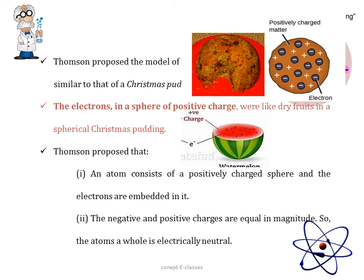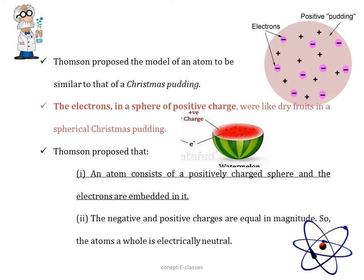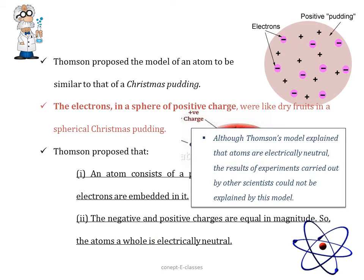We can also think of a watermelon. All the positive charge of an atom is spread over like the red edible part of the watermelon whereas the electrons are like seeds inside the watermelon. Thomson proposed that an atom consists of a positively charged sphere and the electrons are embedded in it. He also proposed that the negative and positive charges are equal in magnitude, so the atom as a whole is electrically neutral. Although Thomson's model explained that atoms are electrically neutral, they failed to explain how the protons and electrons are arranged in an atom. If they are so close to each other, opposite charges will attract each other, so how can we explain that they are electrically neutral? This was one of the drawbacks of Thomson's model.